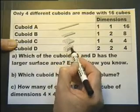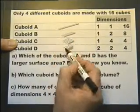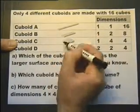So there are 1, 2, 3, 4 ways you could set out your 16 little cubes as a cuboid.